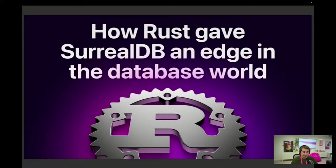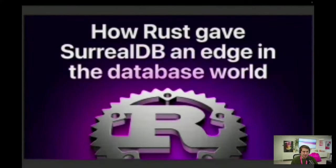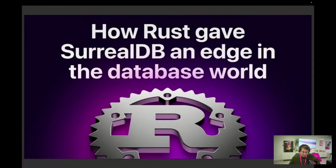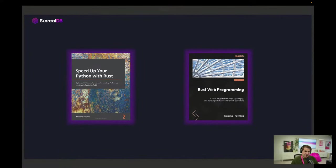Hello. So we're talking today about how Rust gave us an edge in the database space and how Rust really gives everyone an edge. My name is Maxwell Flitten. I'm a software engineer at SurrealDB, mainly working on Rust, ML integration, and the Python integration. I've written two books: Speed Up Your Python with Rust and Rust and Web Programming — the second edition is out, and I'm working on the third edition outline.